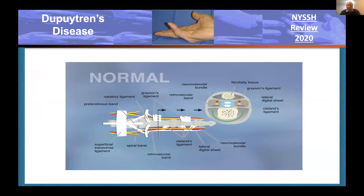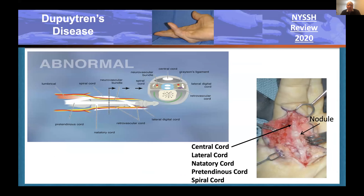Here we see the normal ligaments depicted—note the relationships to the neurovascular bundle, the tendon structures, and bone. Here are the typical abnormal structures that develop as the ligaments change into cords. The central cord is the classic one going right up the middle. The lateral cord, the natatory cord in the web, the pre-tendinous cord becomes part of the central cord, and the famous spiral cord, which we'll go into in more detail.